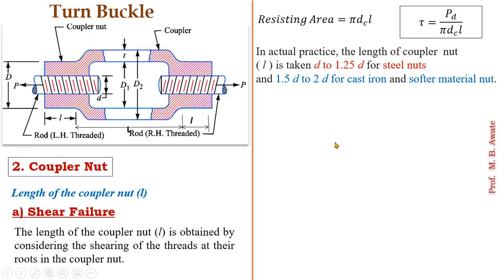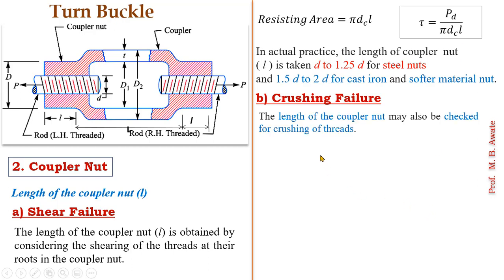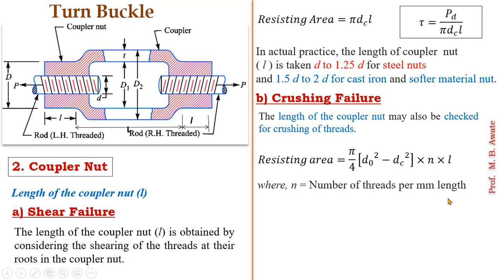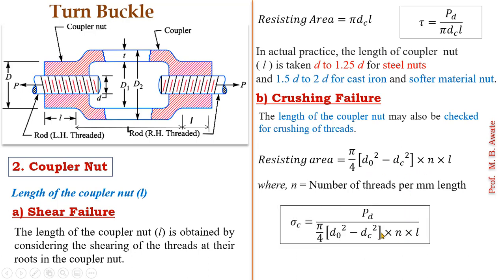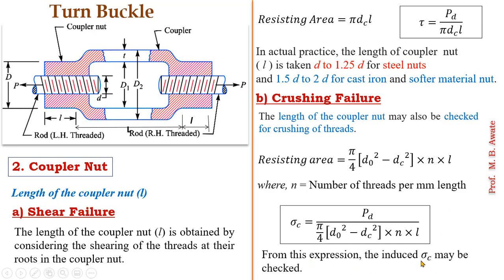After finalizing the length of the coupler nut, we must also check the crushing stresses induced. The length of the coupler nut may be checked for crushing of threads. The crushing resisting area is pi/4 × (do² − dc²) × n × l, where n is the number of threads per mm length, do is the nominal diameter, and dc is the core diameter. Then sigma_c = PD / area. From this expression the induced value of sigma_c may be checked against the permissible limit.